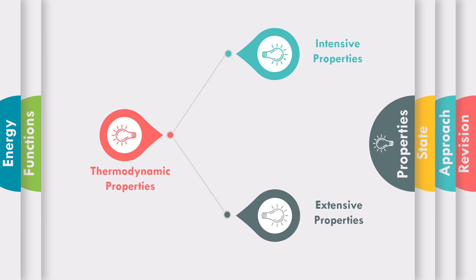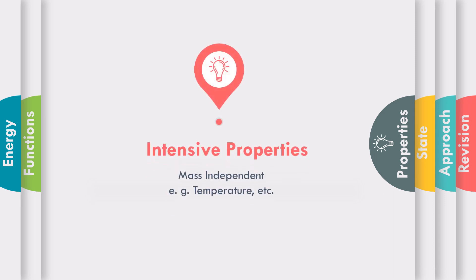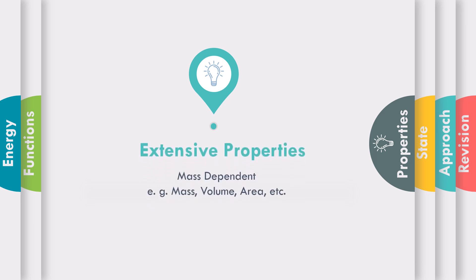Let us study what we mean by intensive properties and extensive properties. Intensive properties are properties of a system which are mass independent — meaning with respect to change in the mass of that system, the properties are not going to change. Extensive properties are mass dependent — meaning if we change the mass of any system, the properties which change with respect to that change in mass are called extensive properties.